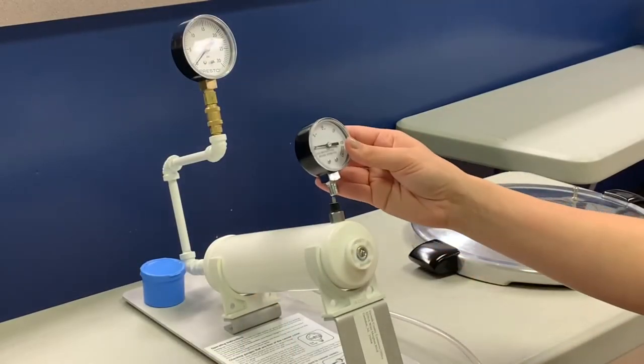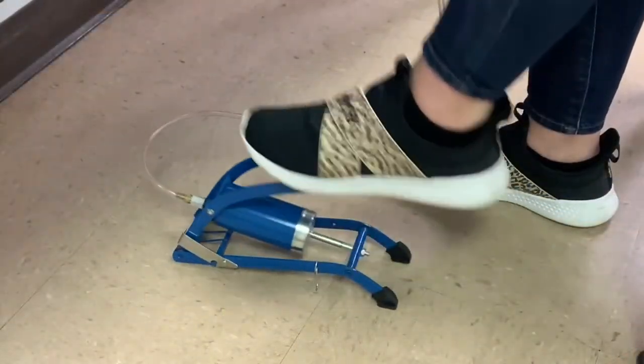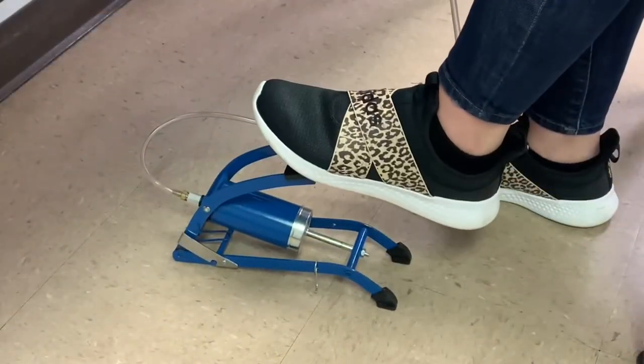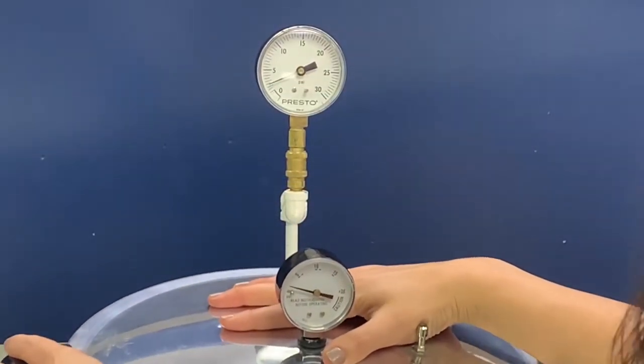Alternately, you can remove the gauge from your lid and test just the gauge. Pump the foot pedal until the Tester gauge reads 5 pounds. Compare your gauge to the Tester. They should be the same.